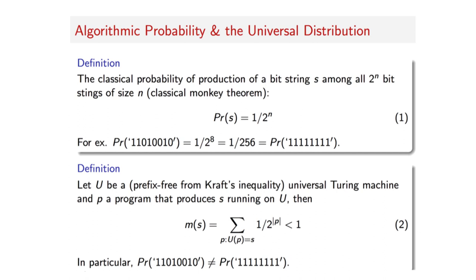However, this is not the case for algorithmic probability, because if S can be produced by a short computer program, then its probability will be larger than for a string that requires a long computer program.